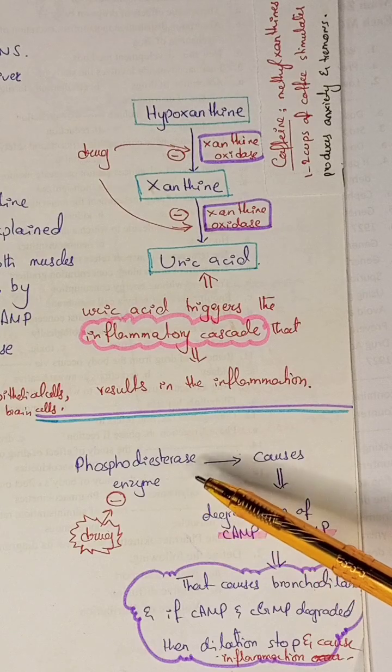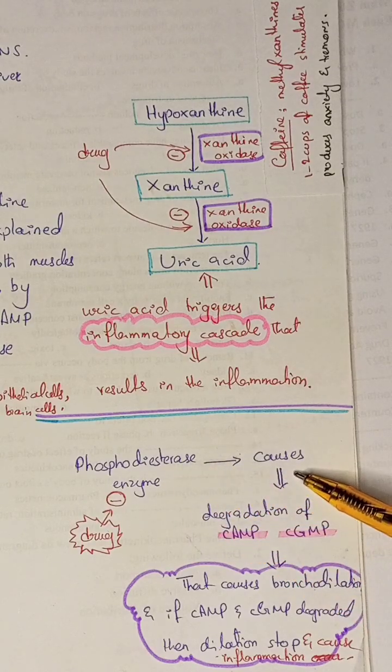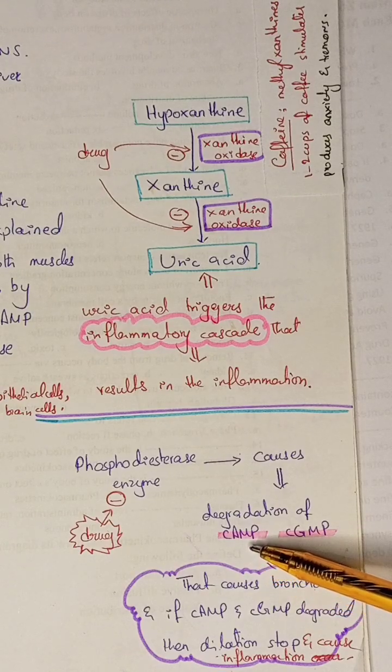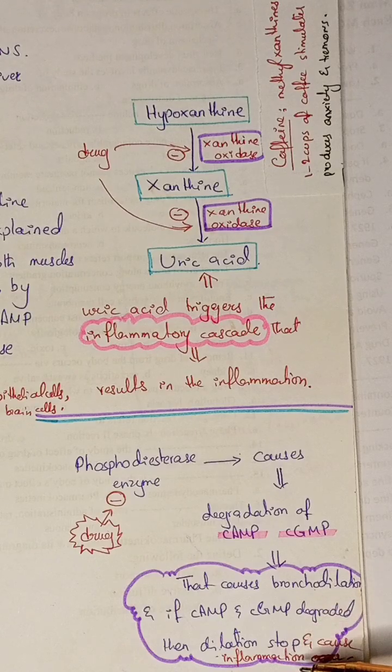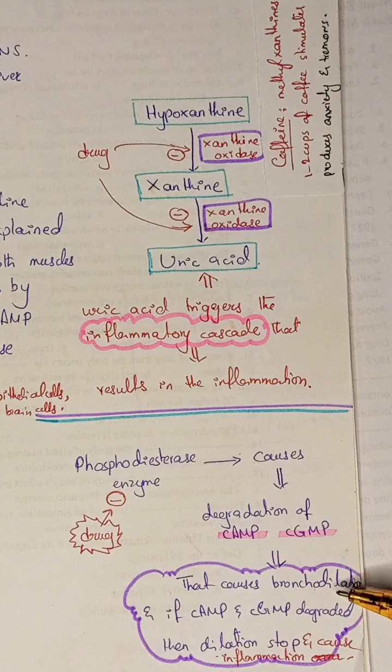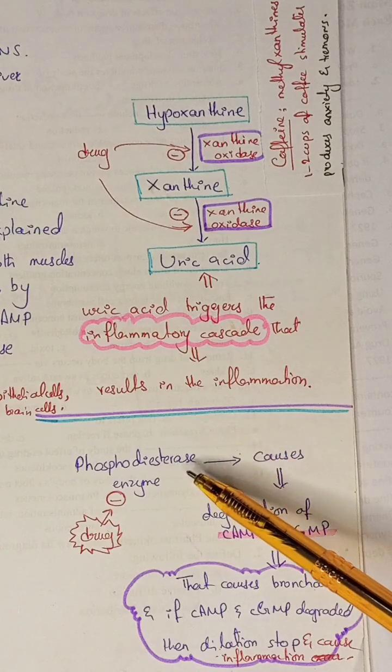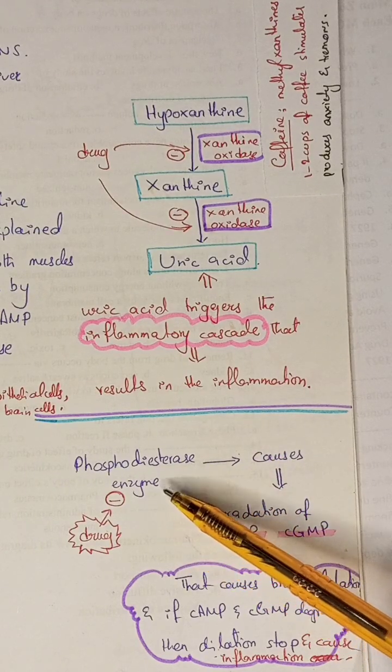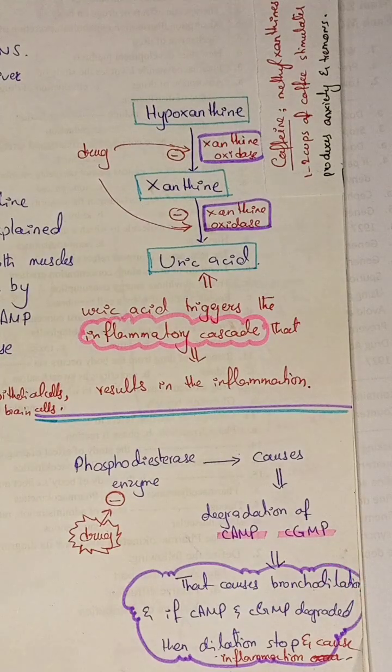Theophylline also inhibits the phosphodiesterase enzyme, which causes degradation of cAMP and cGMP. These cAMP and cGMP cause bronchodilation. When phosphodiesterase degrades them, bronchodilation stops. Theophylline inhibits this enzyme, stopping the degradation of cAMP and cGMP.